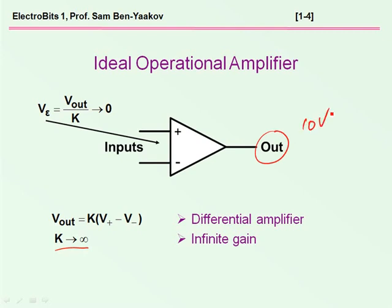say 10 volts, the input required to sustain this voltage is very small. Because the input can be calculated as the output divided by the gain, and if the gain is very high, then of course the required input voltage is very small.